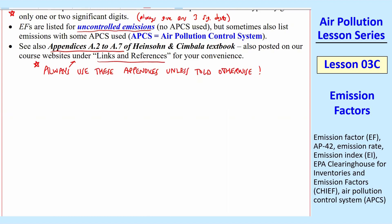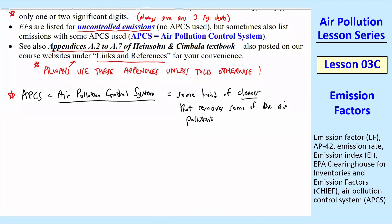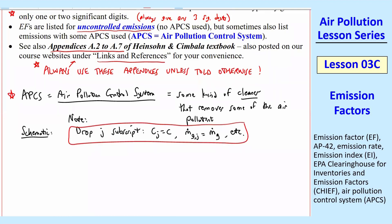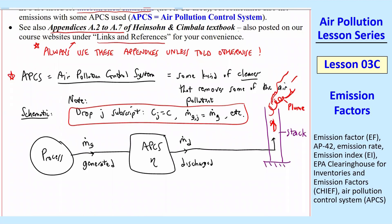Let's talk about air pollution control systems. An air pollution control system, or APCS, is some kind of cleaner that removes some of the air pollution. We never can get rid of all of it, but we measure performance by the removal efficiency. We are dropping the J subscript here, so C_J is just C, M-dot generated becomes M-dot_G, et cetera.